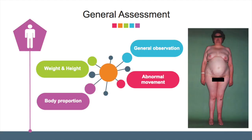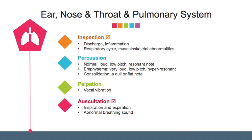When doing general assessment, the pharmacist should conduct appropriate general observation, measure the weight and height, look for body proportion, and abnormal movement. For the assessment of each system, the four basic techniques may be applied.